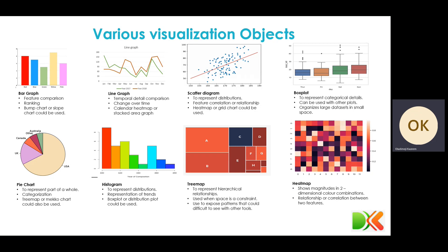Then the next one is scatter diagram. We use the scatter diagram to represent distributions, feature correlation or relationship that exists between two variables. Another thing, another tool that is used in certain situations is the heat map. So it is either we use scatter diagram or use the heat map.